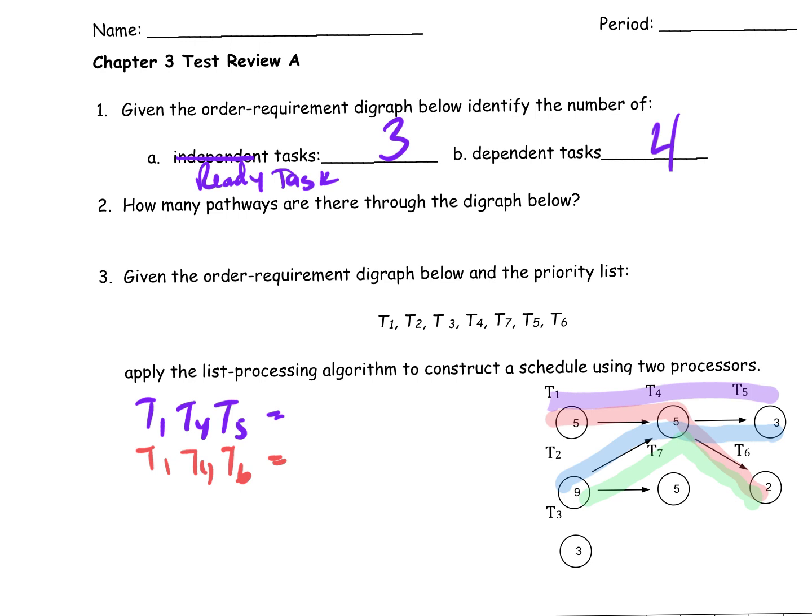I might as well add them up because I've got to figure out a critical path. So 5 plus 5 plus 3 is 13. The next one I have here is Task 1, Task 4, Task 6. That's 5 plus 5 plus 2, which is 12.